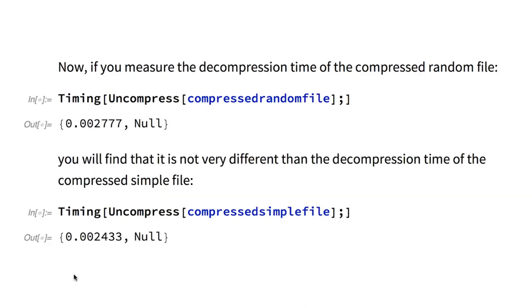Now if you measure the decompression time of the compressed random file, you will find that it is not very different than the decompression time of the compressed simple file. This is because the decompression instructions in both cases are very simple. One because the file is trivial and the other because there are almost no decompression instructions for a random file, because we were unable to compress it by much.